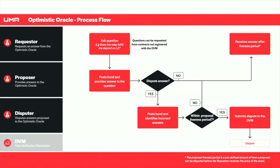There are a couple of actors: a requester, a proposer, and a disputer. The requester asks a question — what we call a price request or oracle request — and says they're willing to pay someone a bond to bring that data on chain. This bond incentivizes a proposer to put the price on chain with what they believe is the right outcome. That proposal goes through a liveness period, during which decentralized parties can say whether the proposal is valid or dispute it if it's not. If it's correct and no one disputes it, it's assumed to be true.